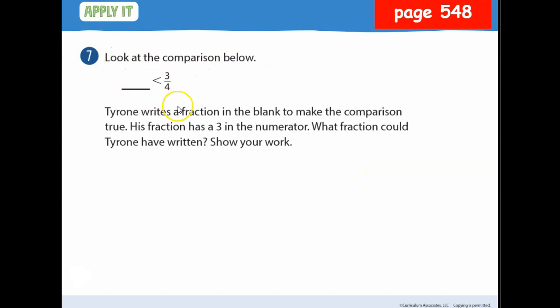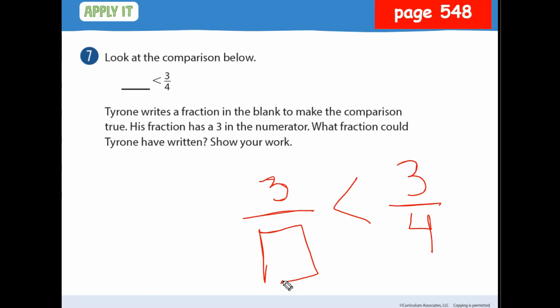Look at this comparison: something is less than 3/4. Tyrone writes a fraction with three in the numerator to make it true. What fraction could he write? Any number greater than four could go in the denominator — like 3/5 or 3/6 — because when numerators are the same, the smaller denominator is the bigger fraction. Any denominator greater than four works.